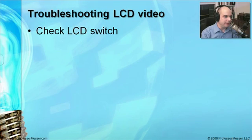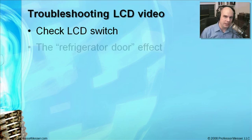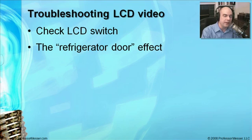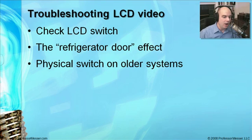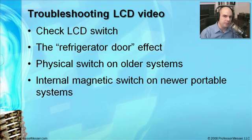Another thing to look for is the LCD switch — a physical switch usually located near the hinge of the LCD screen. This is what I call the refrigerator door effect: when you close the lid, the light turns off; when you open it, the light turns on. On older laptops this is a visible physical switch you can push with your finger to turn the LCD off and on. On newer laptops it's a magnetic switch built inside, with no external physical switch — but they still go bad and may need to be replaced.